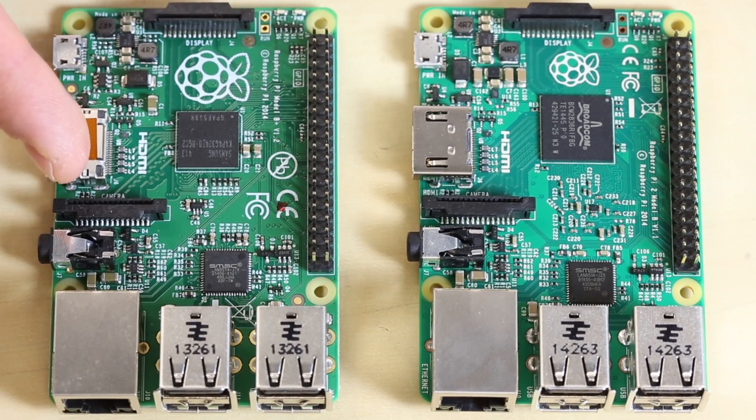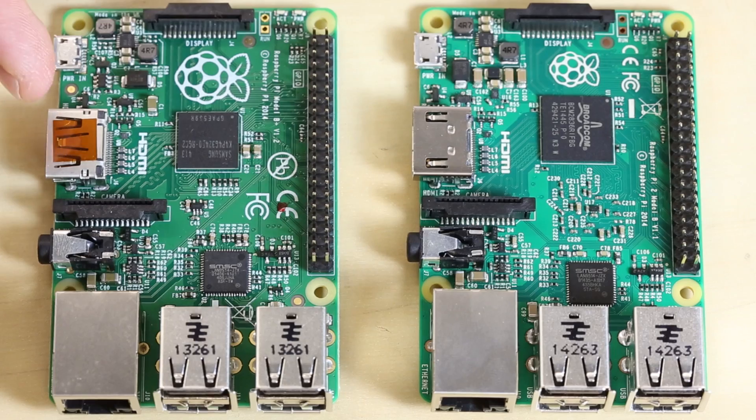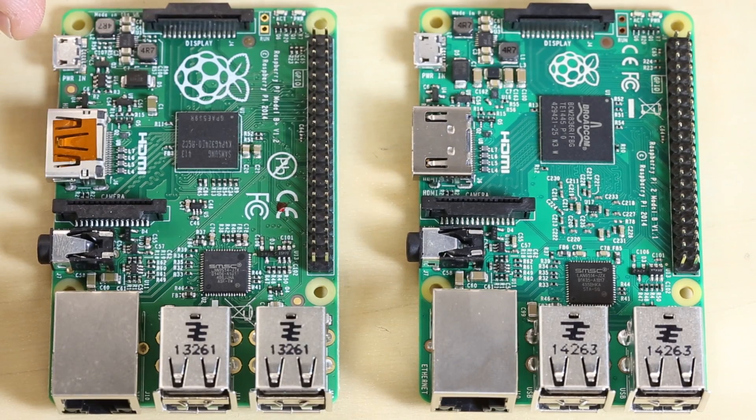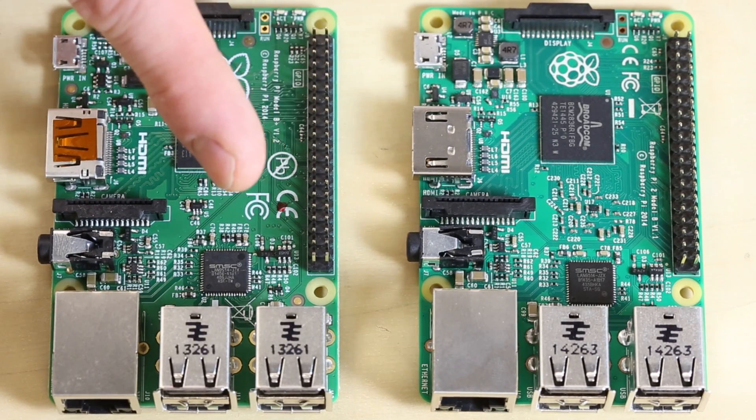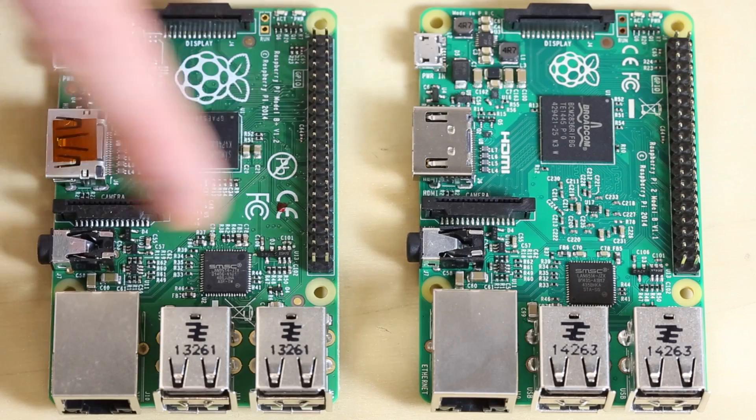There's a camera interface for the flex cable that connects to the Pi camera, HDMI out, a micro USB port for power, 40 GPIO pins, and the same four mounting holes.